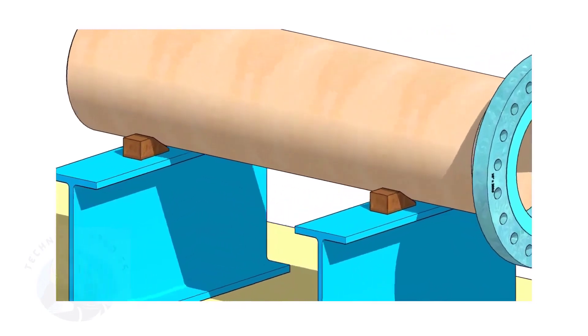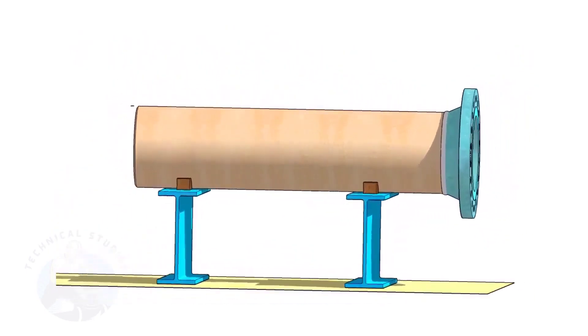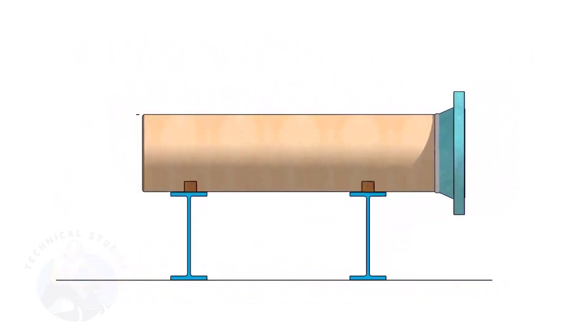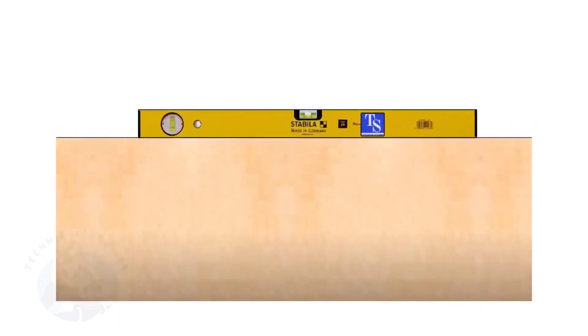Provide proper supports on both sides of the pipe to prevent rotation. Correct the level of the pipe. Check the plumbness of the flange a second time.